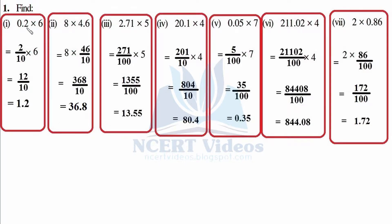For 0.2 × 6: write 2 as it is and represent the decimal with 1, counting the number of digits towards the right of the decimal. In this case it is only one digit, therefore only 10 × 6. Writing the numerator as it is and counting the number of zeros, placing it towards the left — only one place because only 10.